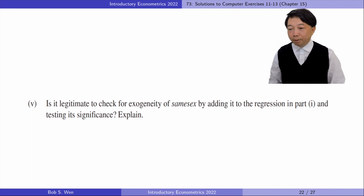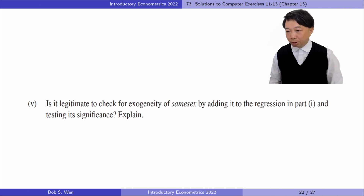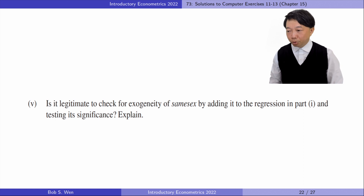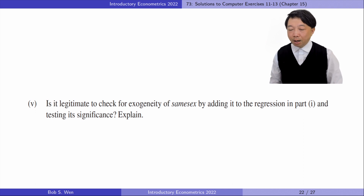In part 5, is it legitimate to check for the exogeneity of same sex by adding it to the regression in part 1 and testing its significance? No — the structural equation suffers from omitted variable bias, and the OLS estimates are not consistent, including the estimate for the same sex variable. Therefore, the tests are not valid.